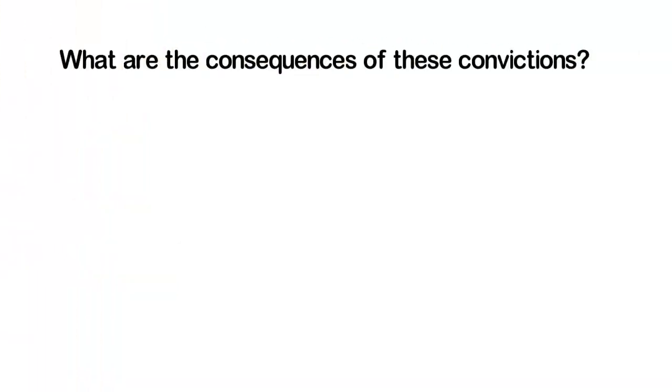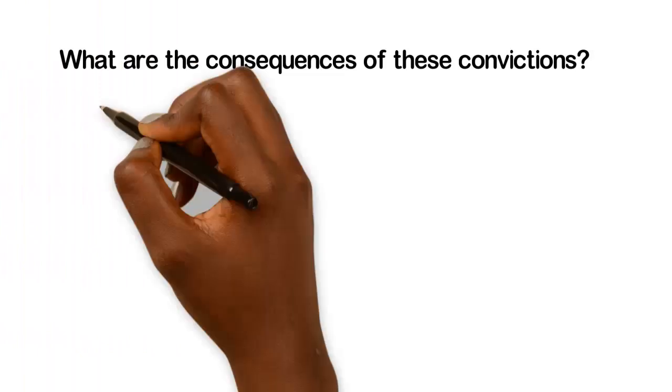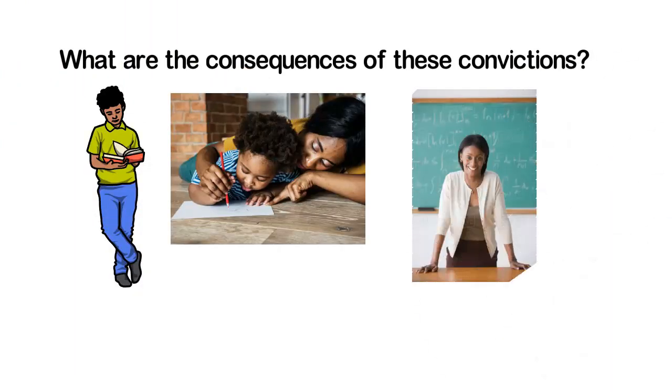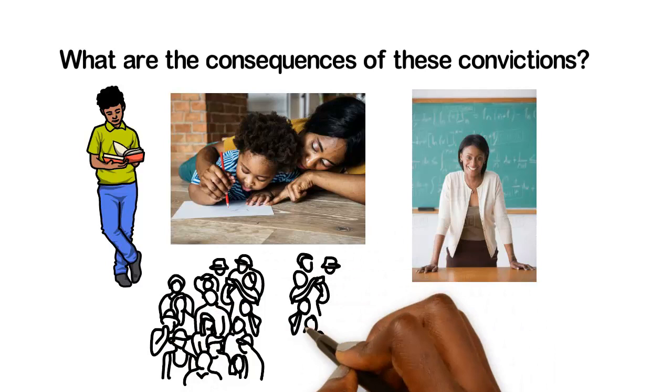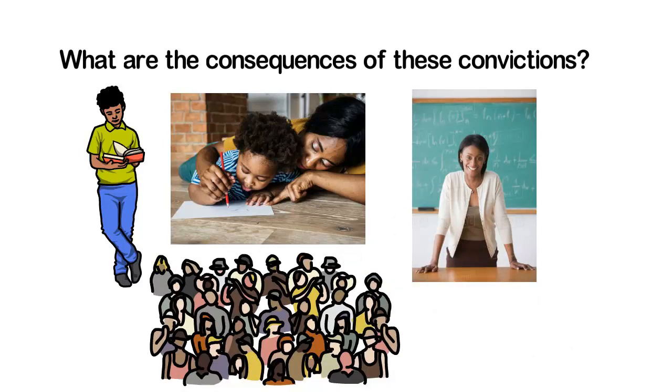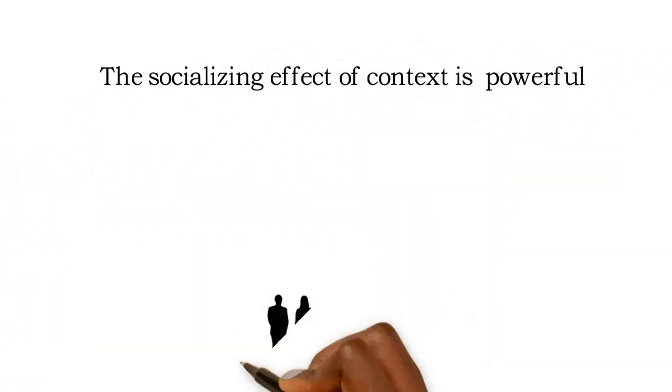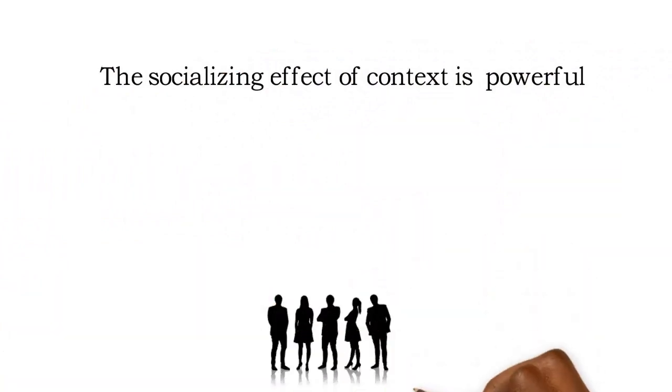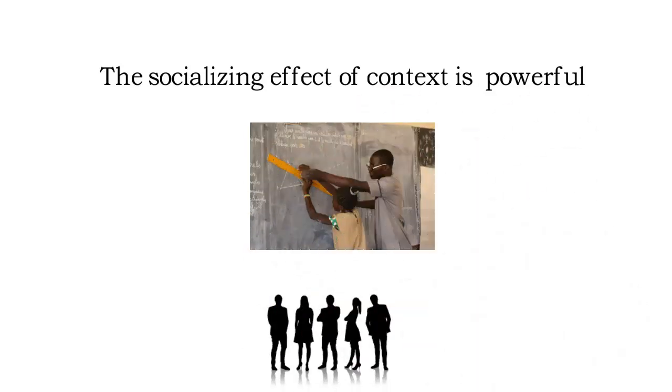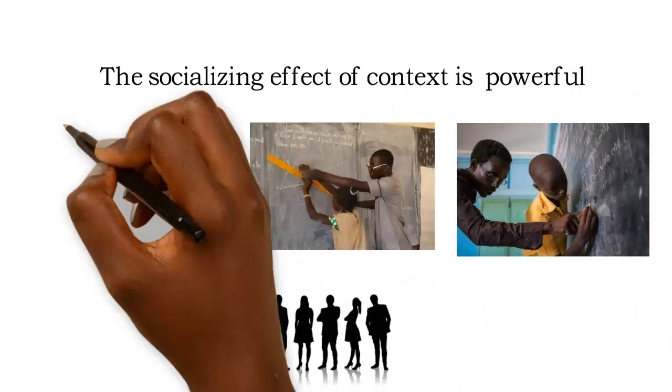These different convictions of students, parents, and teachers about the nature of mathematics are the cause of the inconsistency with practice. The strong influence of social context can lead you to internalize a set of constraints affecting the development of mathematics teaching and learning models. The socializing effect of context is so powerful that despite having different views on mathematics and its teaching, teachers in the same school often adopt similar practices.